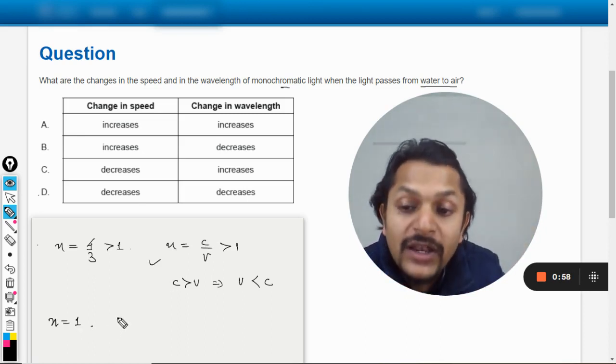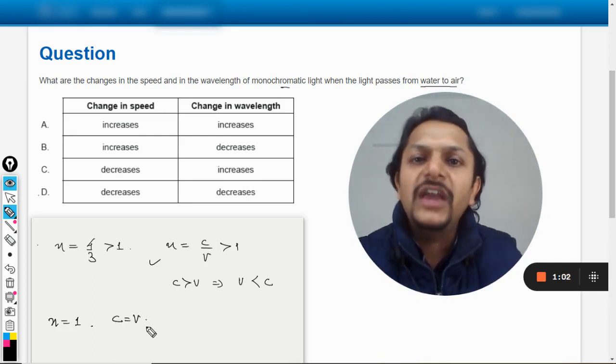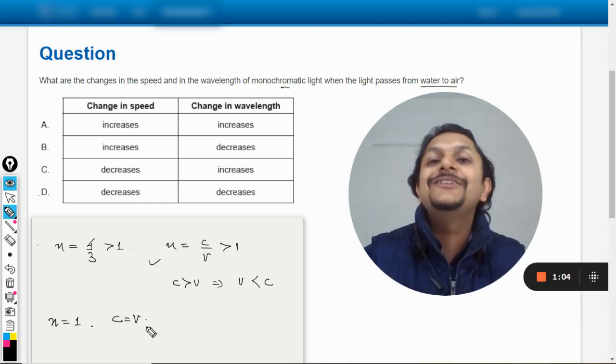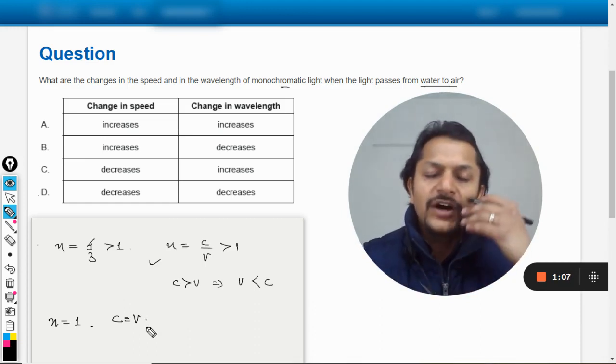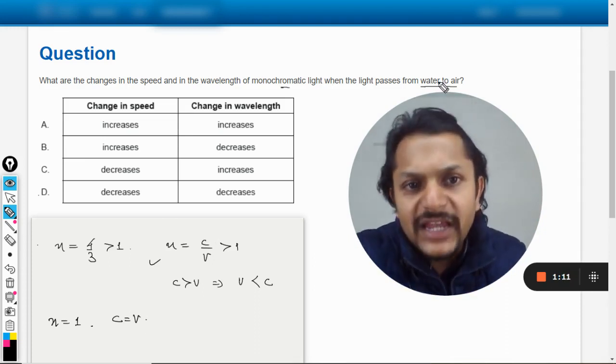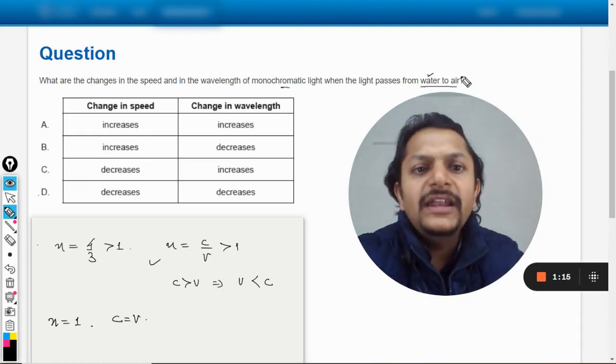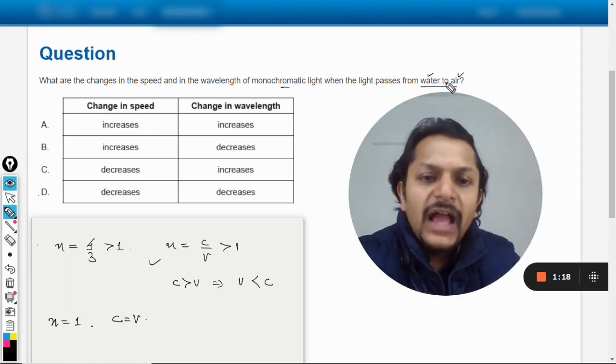The refractive index is taken as 1, so c is equal to v. It means the velocity of the air now will be equal to 3 into 10 raised to power 8, like velocity of the light in air. So that is increased. So it means in water the velocity is lesser and in air the velocity is more.